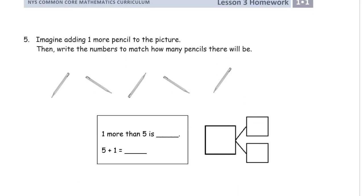Number five, we're on the second page now. Imagine adding one more pencil to the picture. I'm not going to draw the pencil this time. I'm just going to imagine there's one more. Then I'm going to write the numbers in to match how many pencils there will be. We have one, two, three, four, five pencils. If I had one more, there would be six. One more than five is six, which is the same as saying that five plus one equals six. Our total is six, and our addends are five and one.